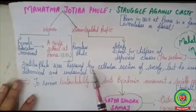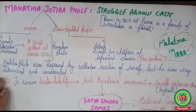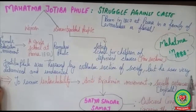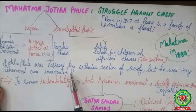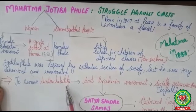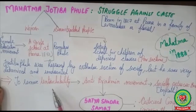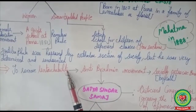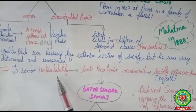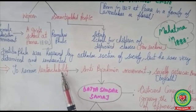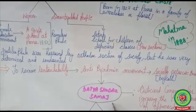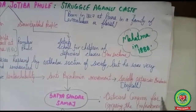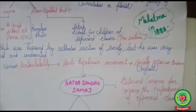He also set up schools for children of the depressed classes and the poor section of society. Jyotiba Phule was harassed by the orthodox and conservative section of society who did not believe in women's education or in removing the caste system, but he was very determined and undaunted. To remove untouchability — a practice from ancient and medieval India where upper-caste Brahmins considered themselves superior — Mahatma Jyotiba Phule started an anti-Brahmin movement called the Satya Shodak Samaj, asking lower-caste people to socially ostracize and boycott Brahmins.